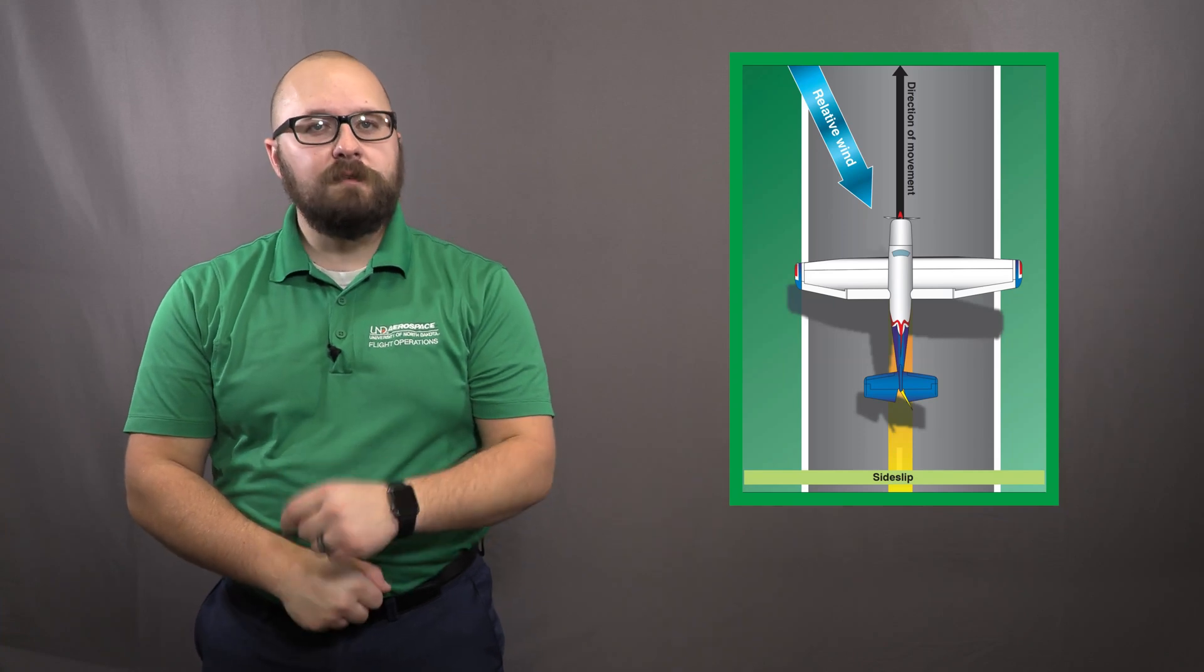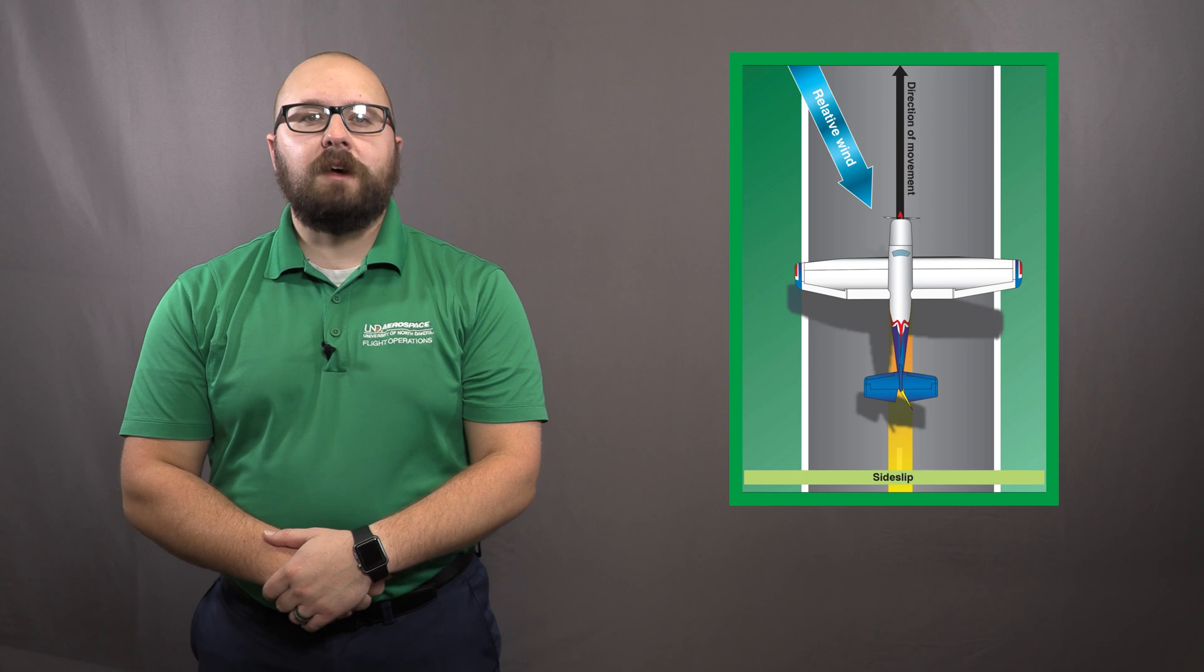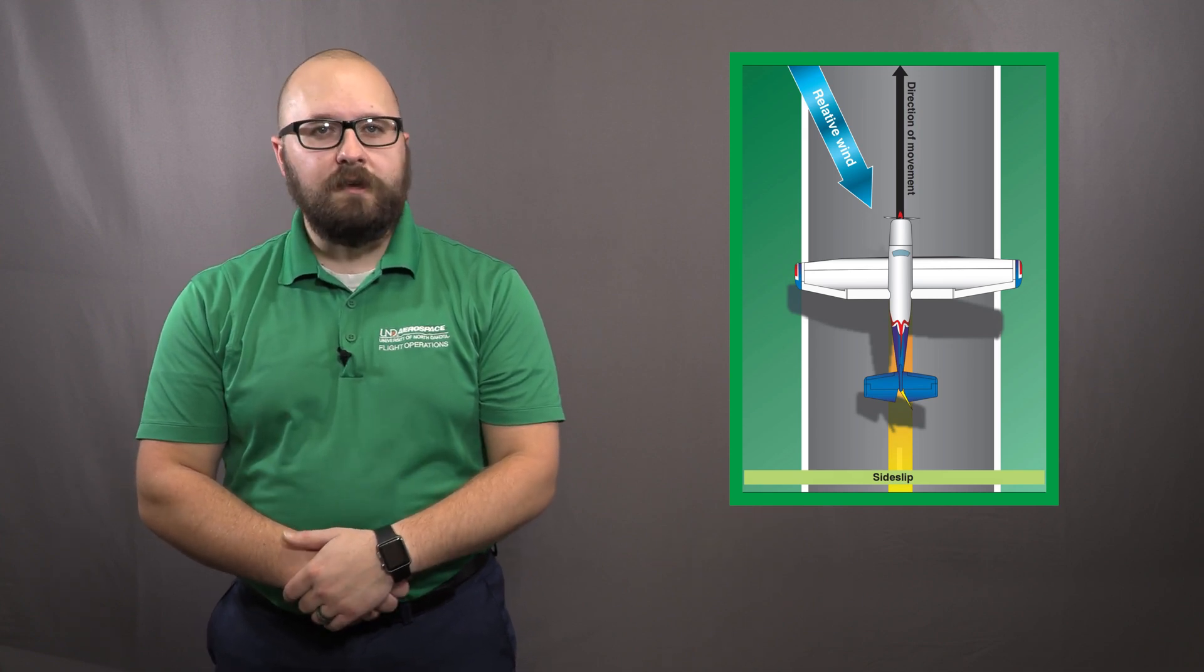The second contributing factor to most loss of directional control events is crosswind correction. This can be taught to be added at many different places on the approach. Early in flight training, you may want to add crosswind correction as early as 200 feet AGL. This will allow you to get a feel for how much correction is needed to maintain the sideslip into the roundout and flare.